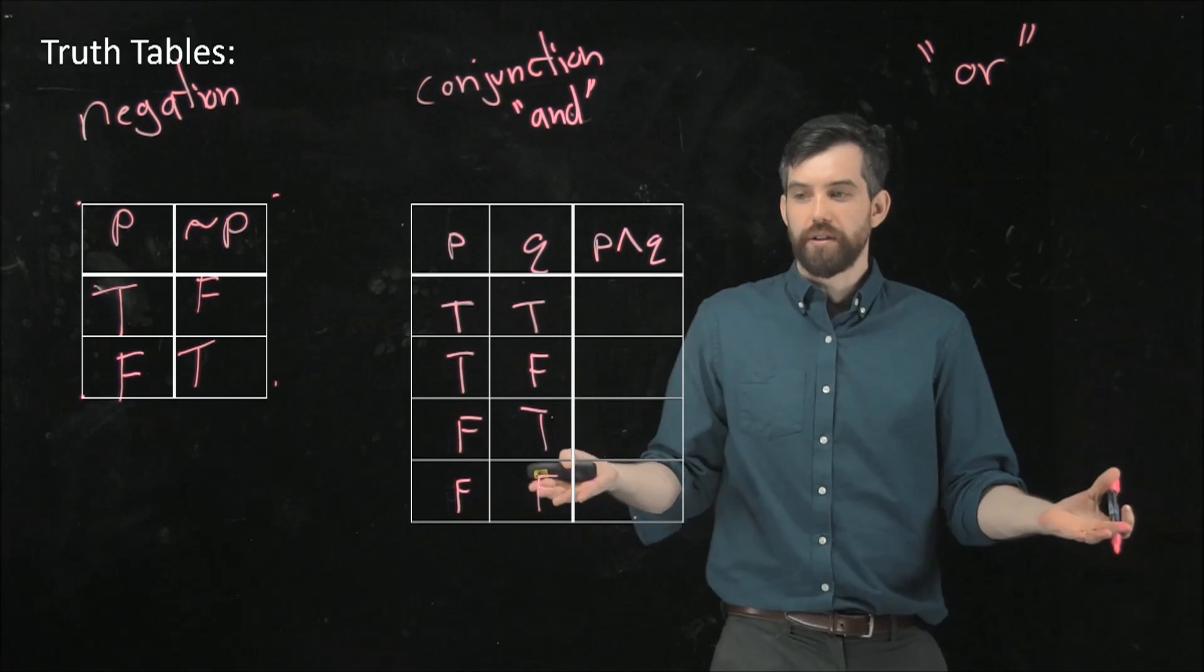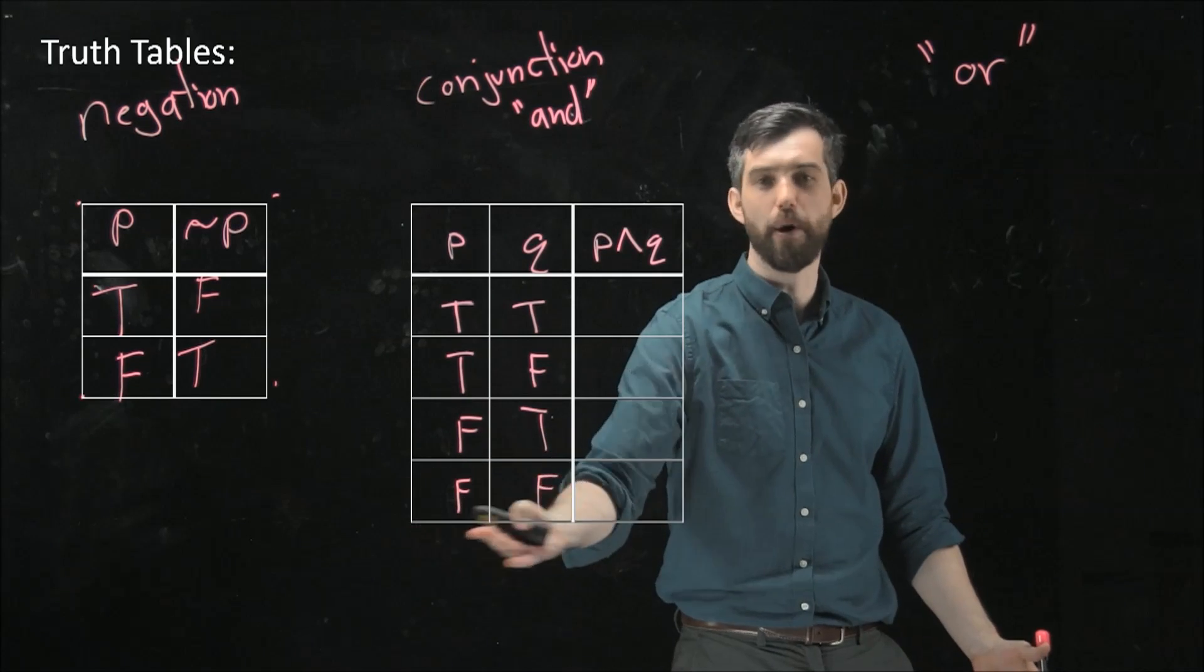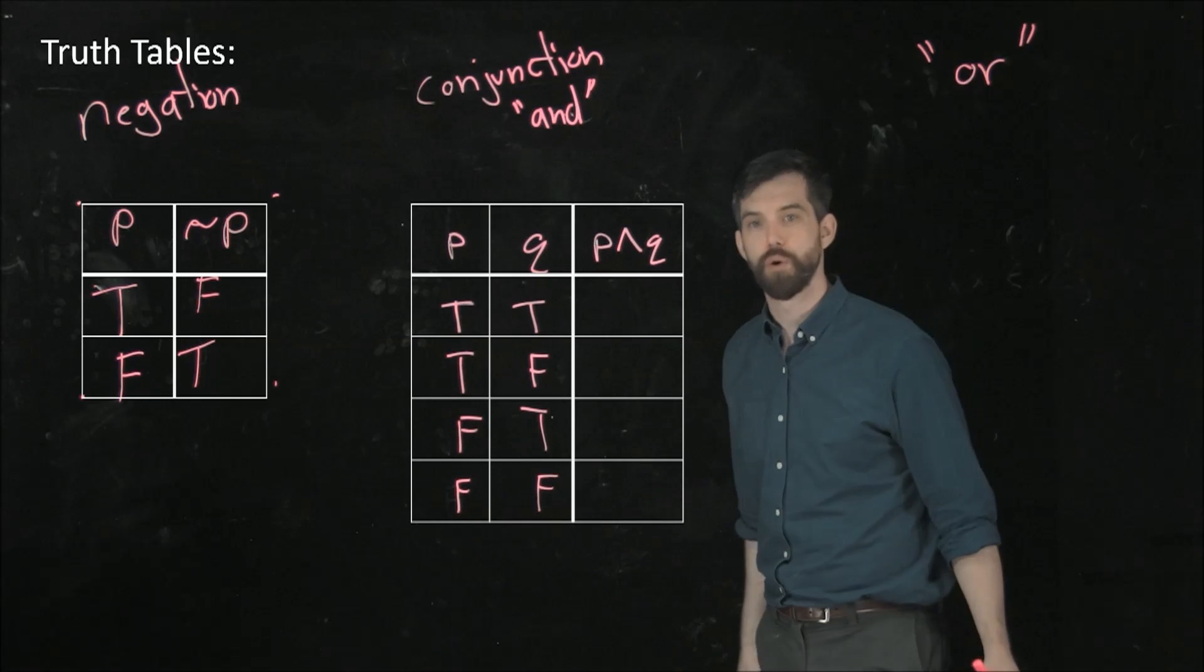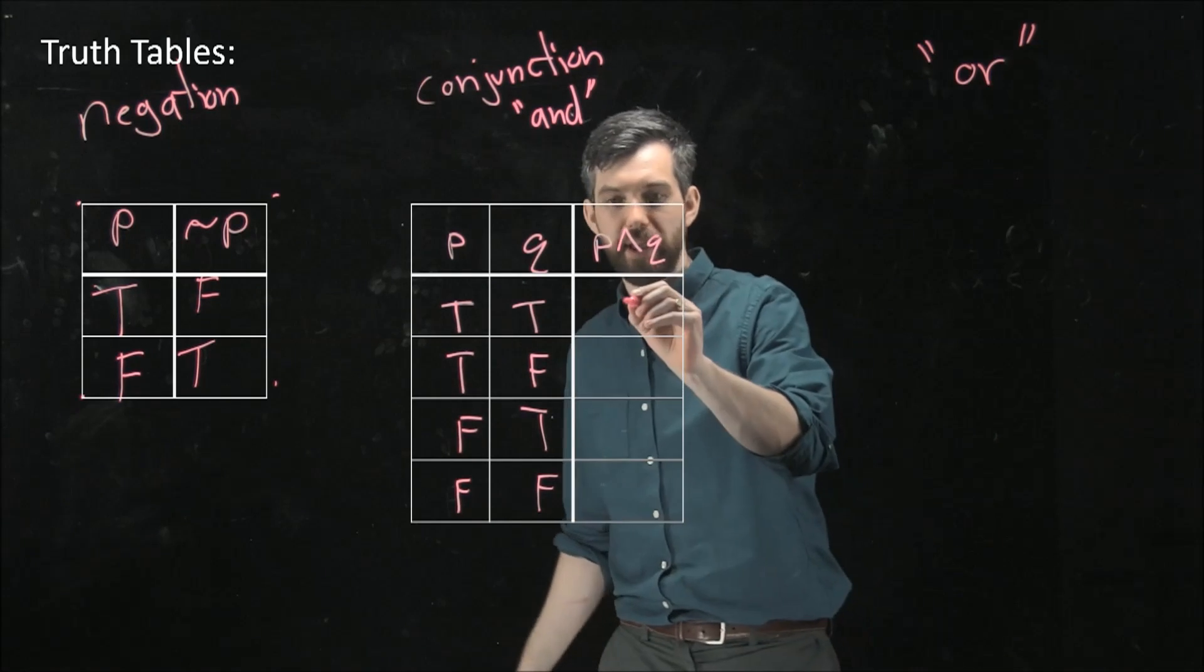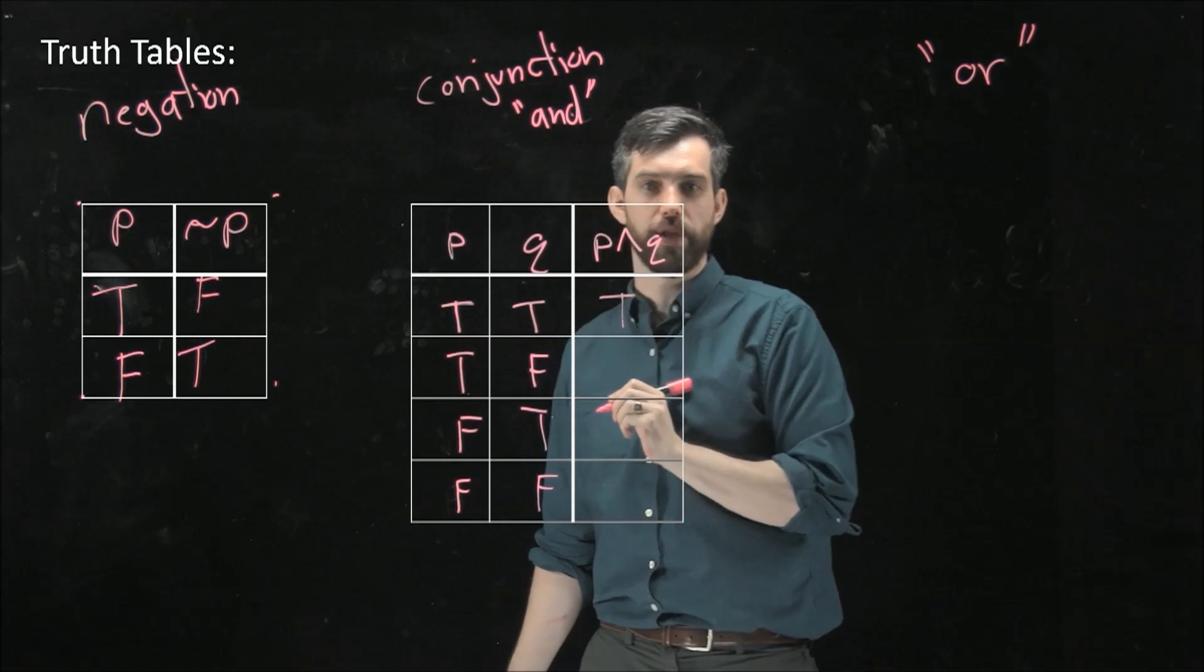So if either of them is false, for example this one is false, q is here, p is false here, they're both false here. All of these three cases, you don't have both of them being true. So to fill in this table, what I'm going to have is true, true, then both of them are true, yes.